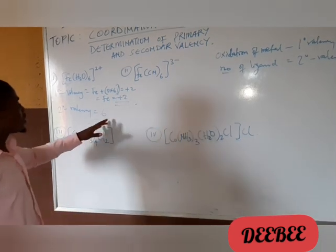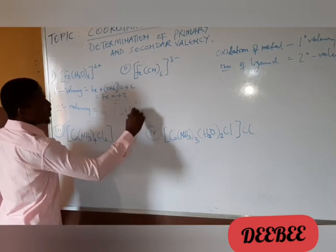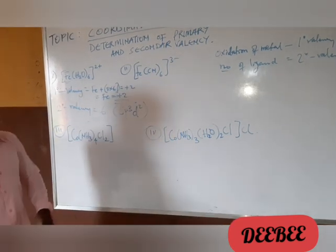And from here, you can also determine the hybridization. When you have 6, the hybridization is sp3d2. Yes. And that's the secondary complex.